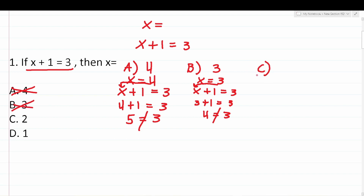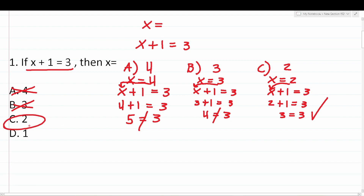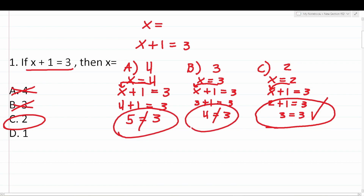Let's test c. C says two, so x equals two. Plugging into x plus one equals three, this becomes two plus one equals three. Two plus one is three. Does three equal three? It does — that is a true mathematical statement. Therefore, c is the correct answer. The key takeaway: whichever answer choice makes a true mathematical statement is correct; those that don't are incorrect.